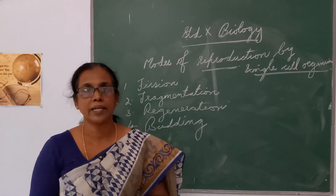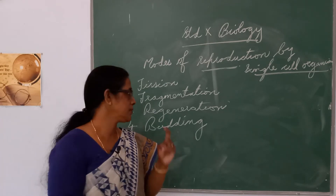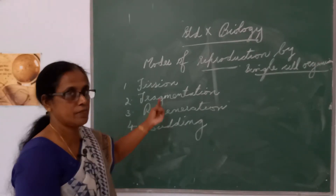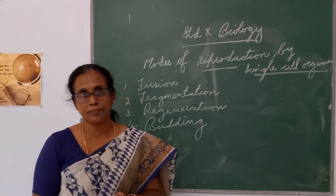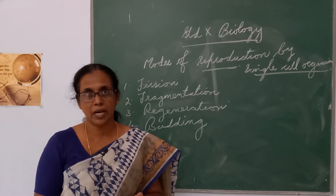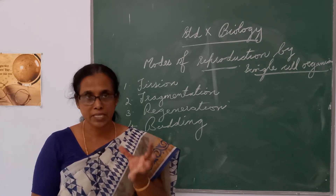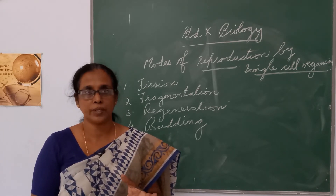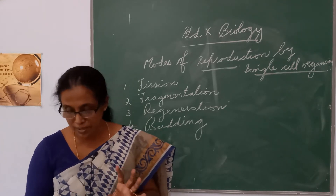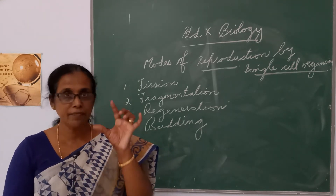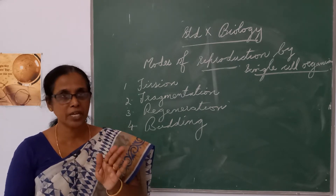In a single organism there is only one cell. The first process is fission — fission means division. In the case of amoeba there is only one cell; how does reproduction take place? That cell divides into two. This is known as binary fission — dividing the body into two. First a shrink appears.